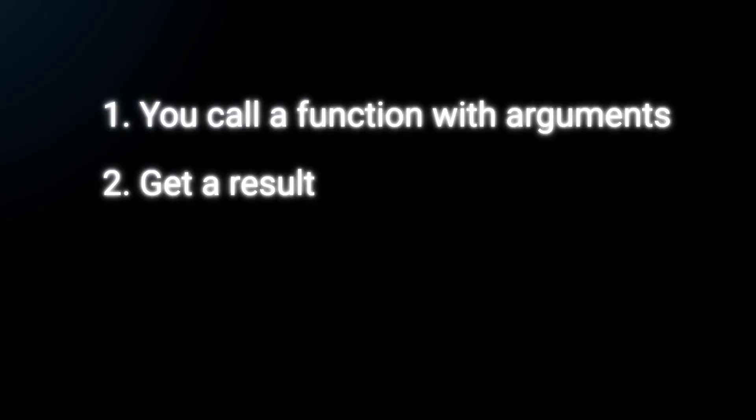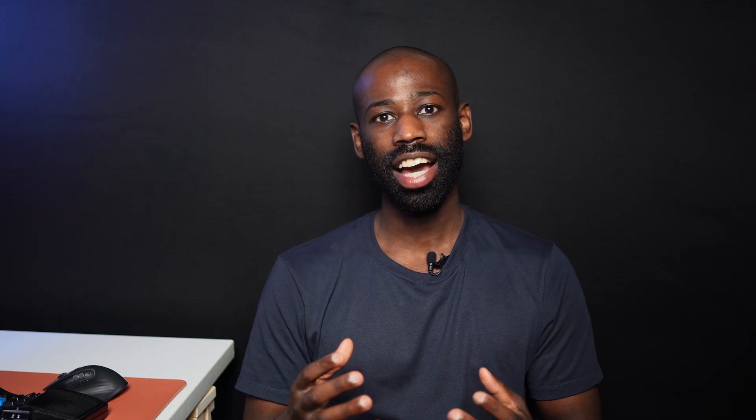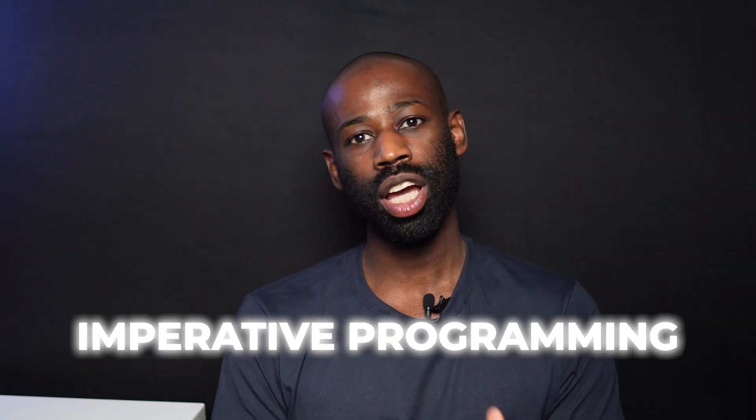But fortunately, there is a way to reduce coupling. To understand how to decouple our systems, we first need to understand why we have a natural tendency to build coupled systems — because as developers, most of us are used to thinking in terms of procedures. You call a function with arguments, get a result, and make decisions based on the results. This kind of logic reads like a recipe: do this, then do that, then call this function — if it returns x, do y. This style of programming is called imperative programming.